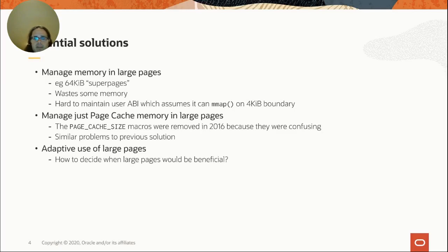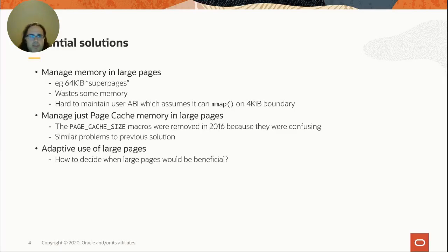One way to solve this is to manage memory in larger pages — increase the page size from the CPU's native size to perhaps 64 kilobytes. This approach will waste some memory: a file that's only eight kilobytes would use 64 kilobytes to cache it. A bigger concern is that it's hard to maintain the user ABI, because the user ABI assumes it can map on a four kilobyte boundary. If we're using 64 kilobyte pages and trying to map at four kilobyte granularity, that gets quite tricky. This approach has never really found much favor.